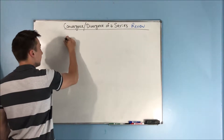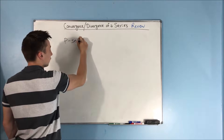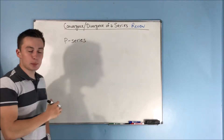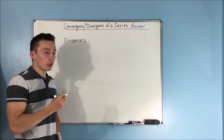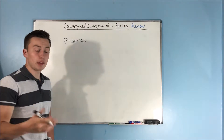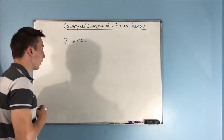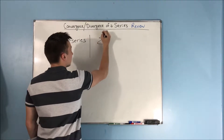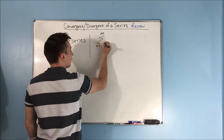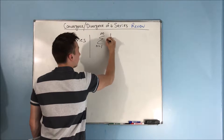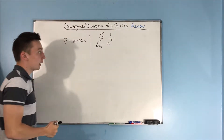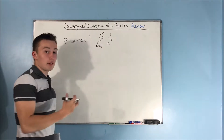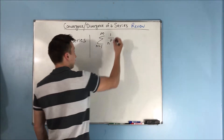The first of those is the P-series. The P-series, which does pop up a lot in your tests — you might compare to it or something like that. The P-series takes on the form: the sum from n equals 1 to infinity of 1 over n to the P. That P in P-series means everything to whether this converges or diverges.